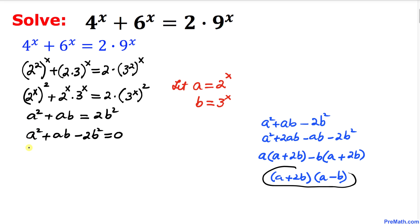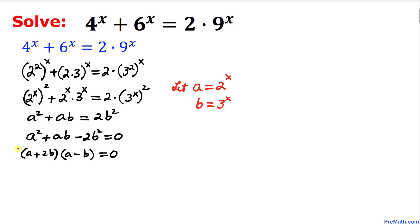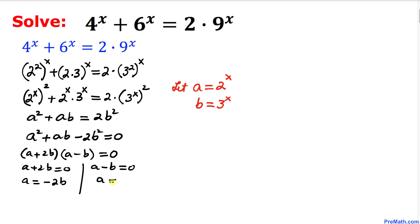Our equation factors as (a + 2b)(a - b) = 0. Splitting into two factors: a + 2b = 0 gives a = -2b, and a - b = 0 gives a = b.